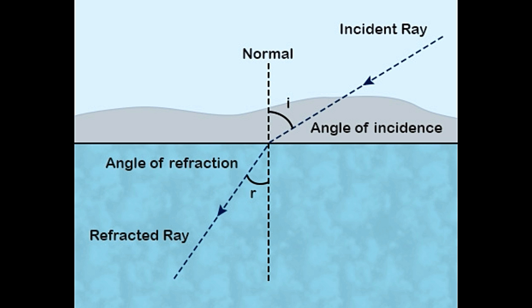Sin I equals V1 equals N1 Sin R V2 and N2. Where V1 and V2 represent the different velocities of light in each medium, and N1 and N2 represent the refractive index of each medium.